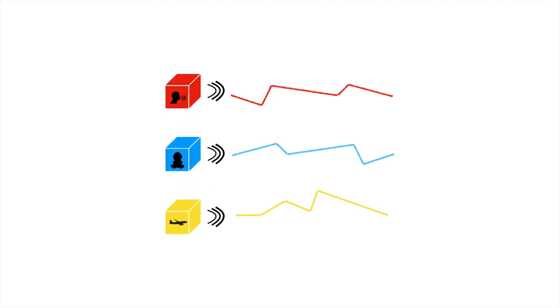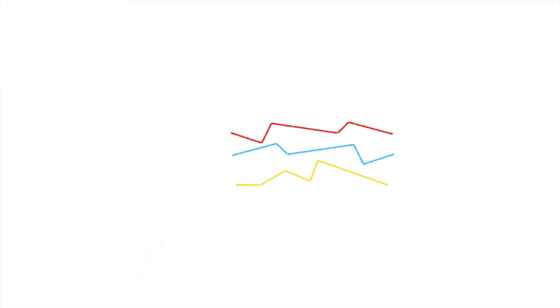One criterion that has serious implications for voice leading is closeness of register. When sounds occupy the same area of a staff, they're more likely to be perceived as coming from the same source.